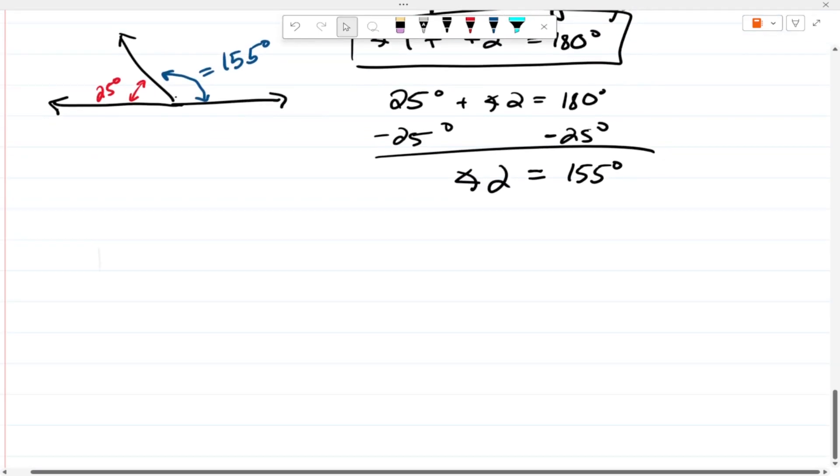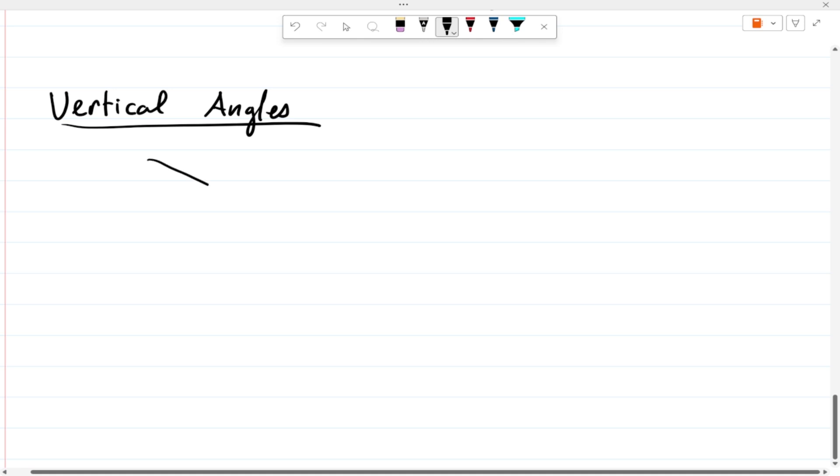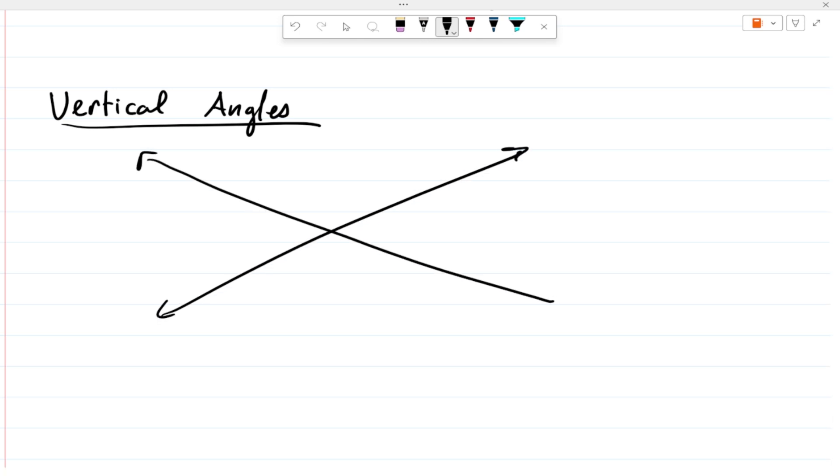Now, the next type of angle or relationship are going to be these things called vertical angles. Now, vertical angles occur whenever you have the intersection of two lines. So, we'll call this line one. We'll call this line two. If I label these angles one, two, three, and four, what we're going to find is that angle one is going to equal angle three. And we call these two angles congruent. Congruent meaning the same. So, angle one, angle three are the same. And then angle two and angle four are the same.